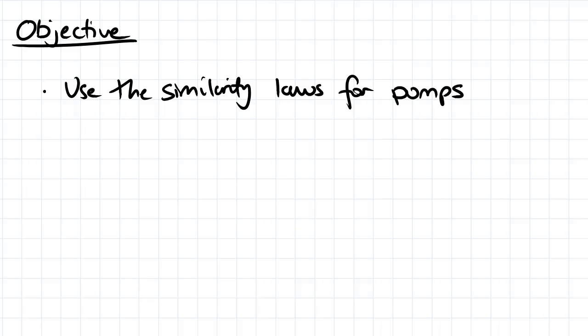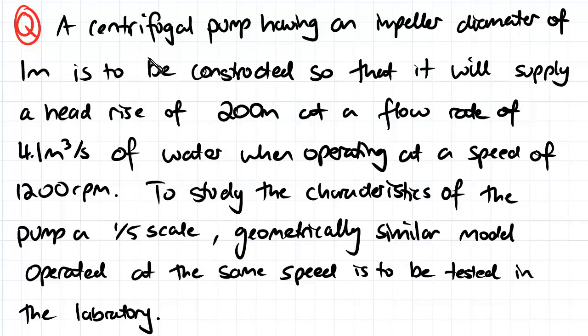Hey guys, the objective for this video is to use the similarity laws for pumps. We have a centrifugal pump which has an impeller diameter of 1 meter and is to be constructed so that it will supply a head rise of 200 meters at a flow rate of 4.1 meters cubed per second of water when operating at a speed of 1200 rpm.